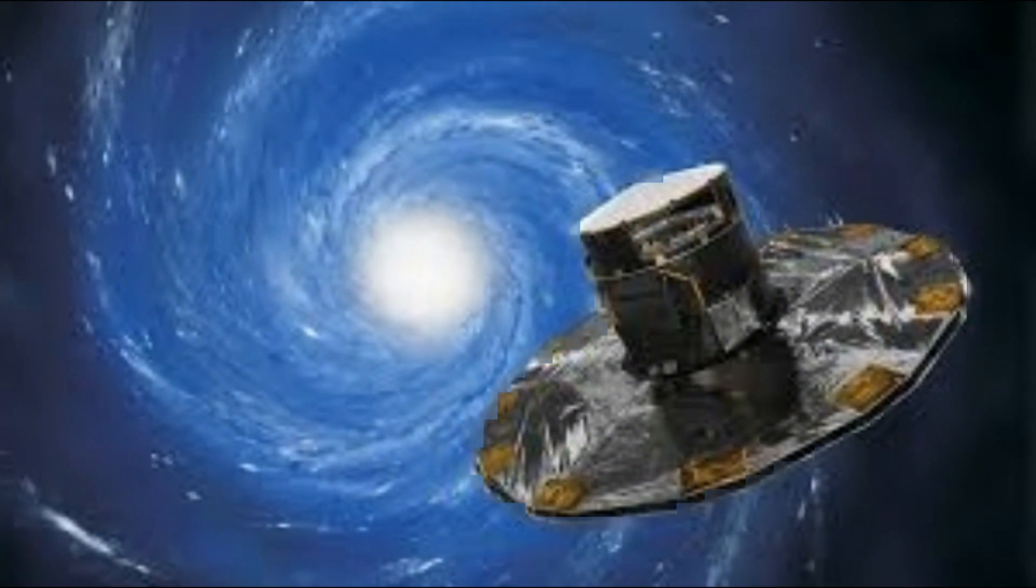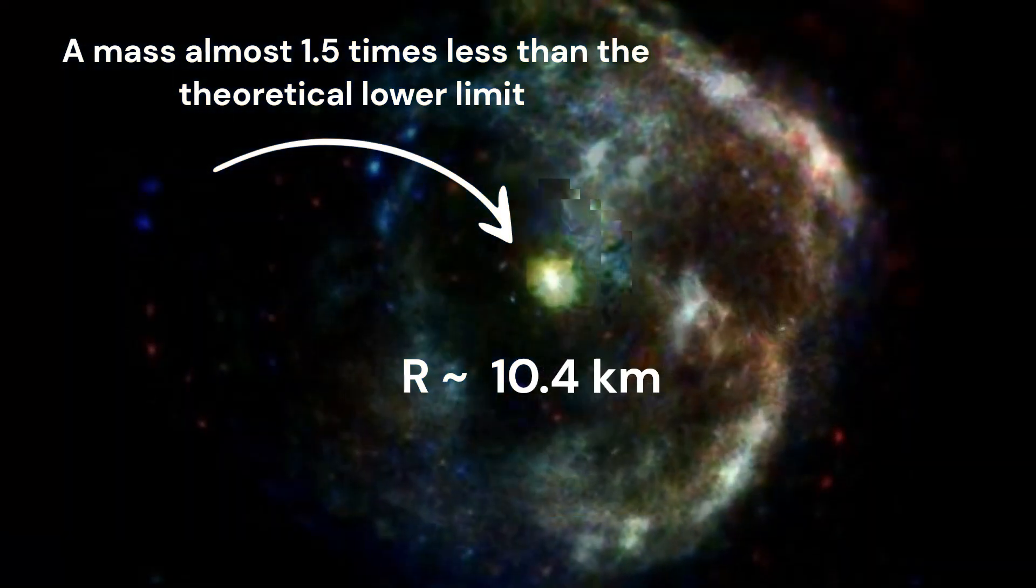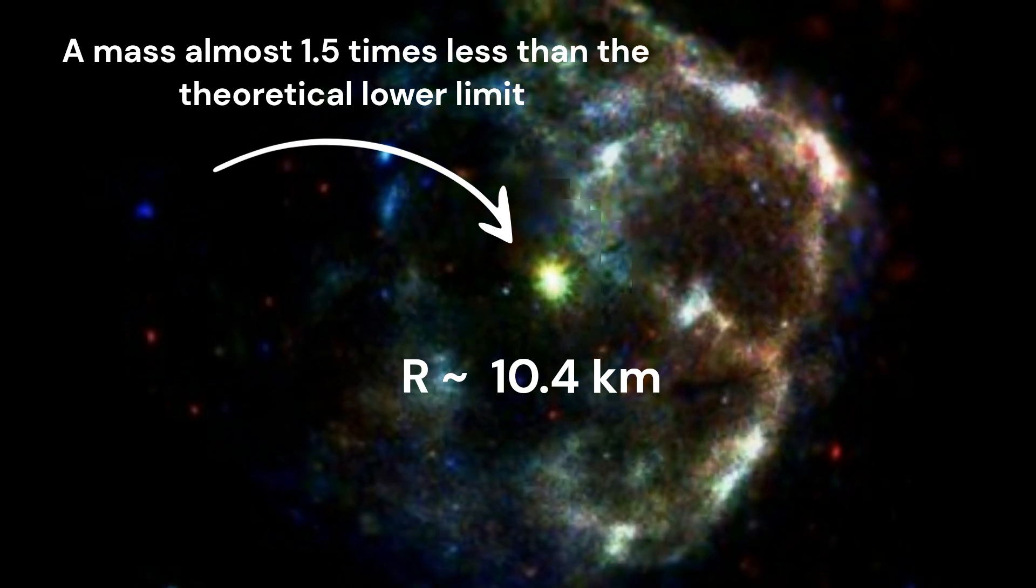It turns out that an object of this type typically has a radius of about 10.4 kilometers and a surface temperature of about 2 million degrees Celsius.